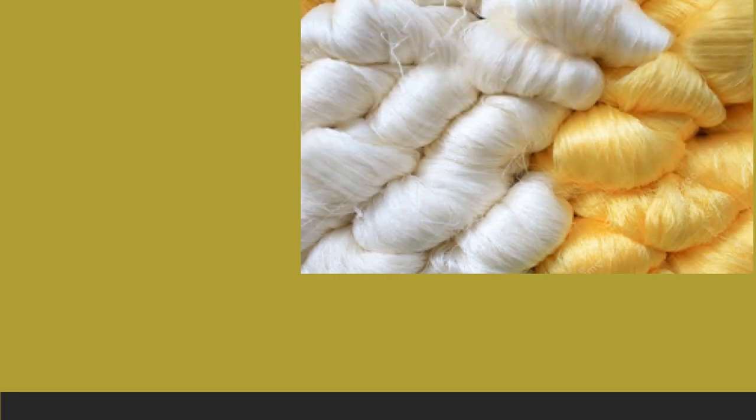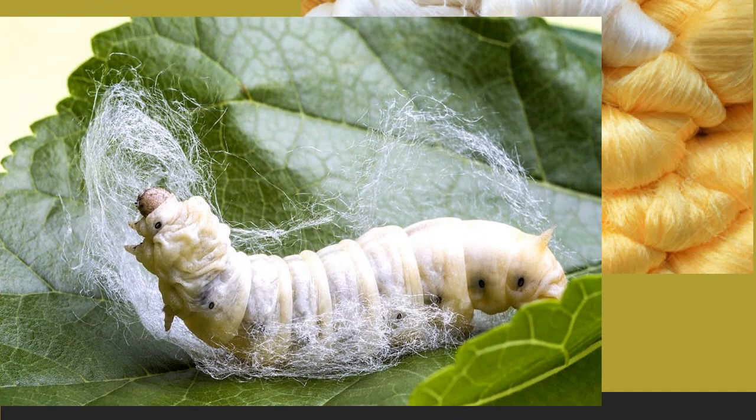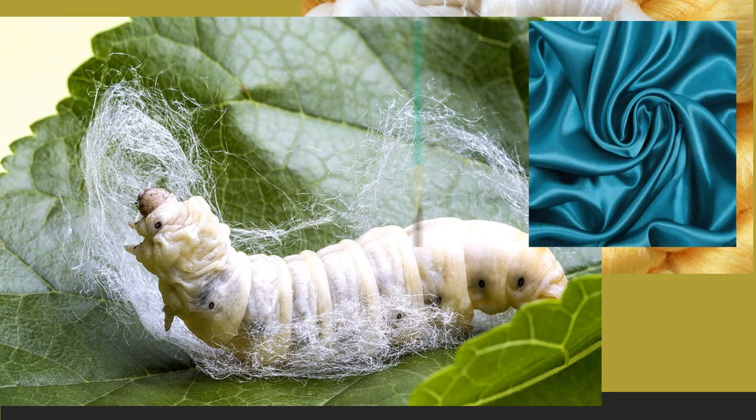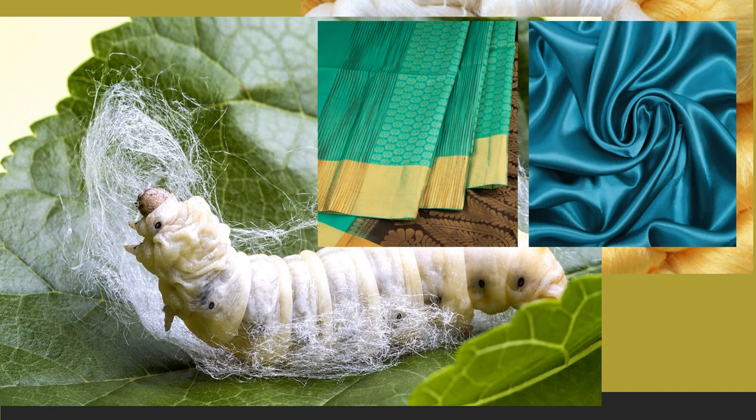Now, this is silk. From where do we get silk? We get silk from the silkworm. From the silk thread, we make silk sarees and many other clothes from silk.